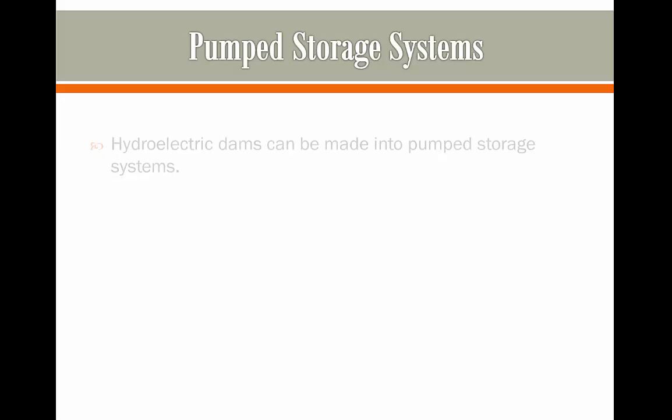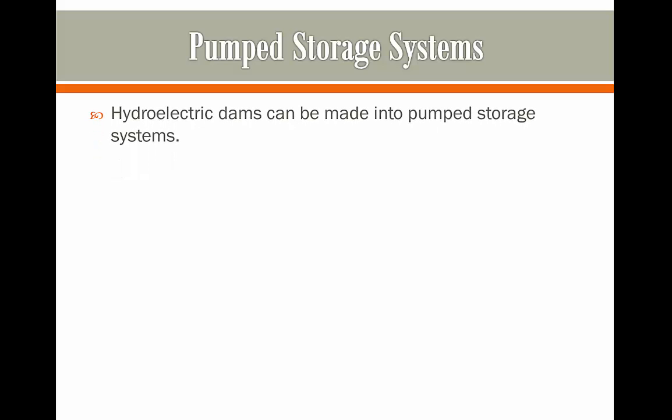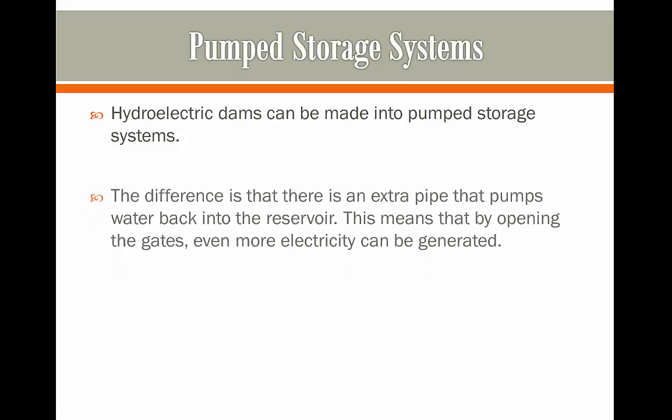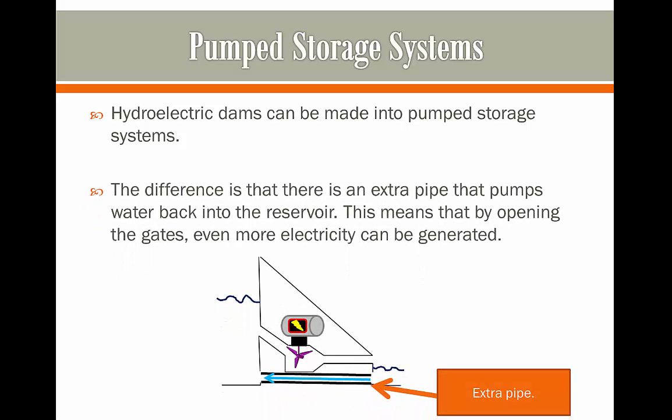Now we'll look at a pumped storage system. Hydroelectric dams can be manipulated and changed to produce a pumped storage system. The difference is that there is an extra pipe in a pumped storage system which is going to pump the water back into the reservoir. This means that by opening the gates even more electricity can be generated, because we're putting more water back into the original reservoir to turn the generator even more.